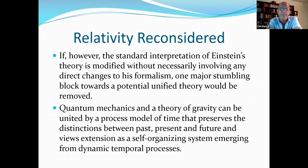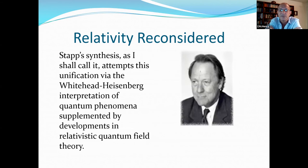If, however, the standard interpretation of Einstein's theory is modified without necessarily modifying any of the direct changes to the formalism, one major stumbling block towards a potential unified theory could be removed. Quantum theory and a theory of gravity can be unified by a process model of time that preserves the distinction between past, present, and future, and views extension as a self-organizing system emerging from dynamic temporal processes. Stapp's synthesis, as I shall call it, attempts this unification via the Whitehead-Heisenberg interpretation of quantum phenomena supplemented by developments in relativistic quantum field theory.